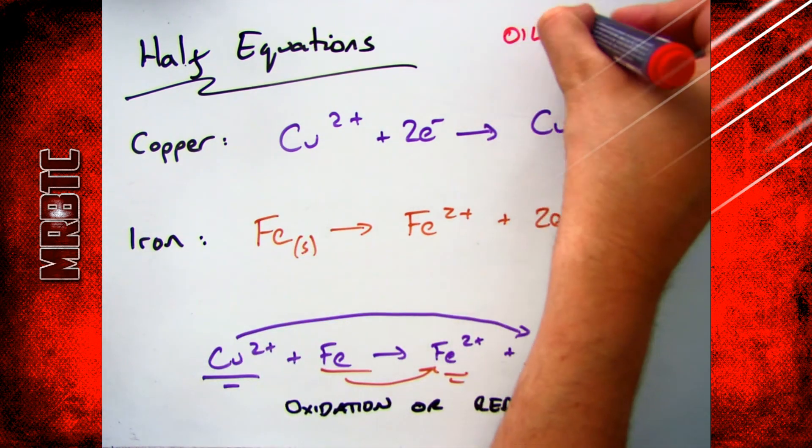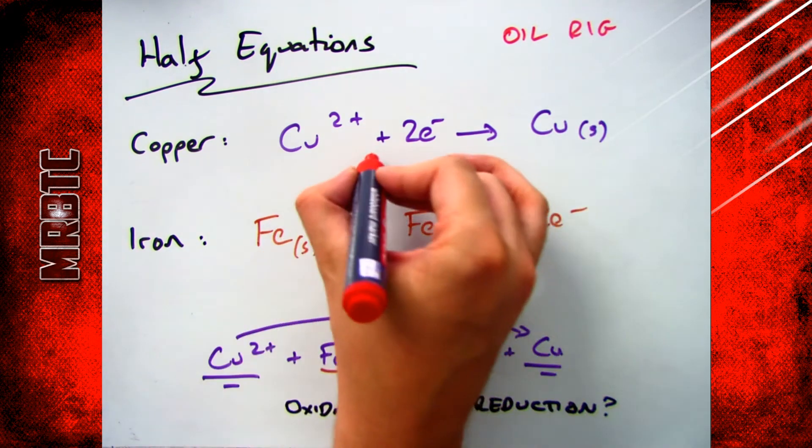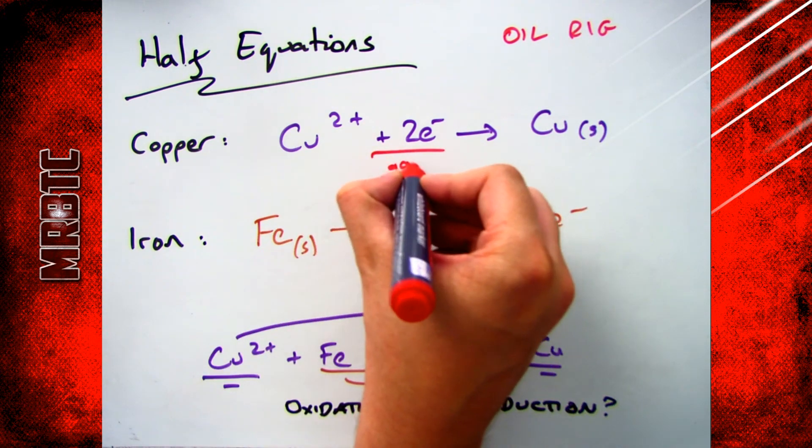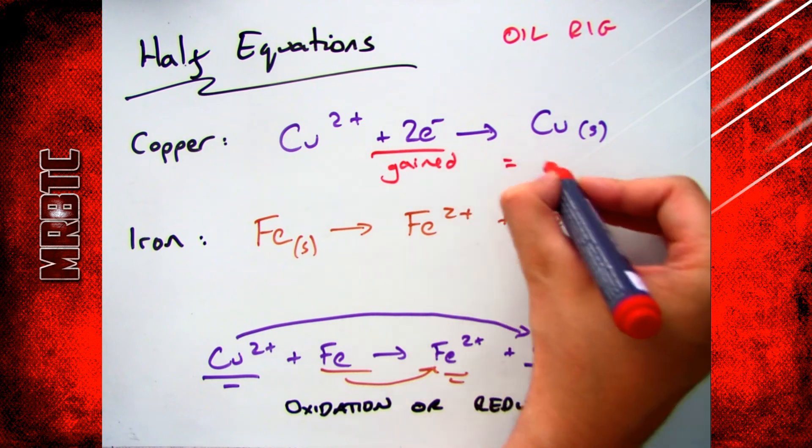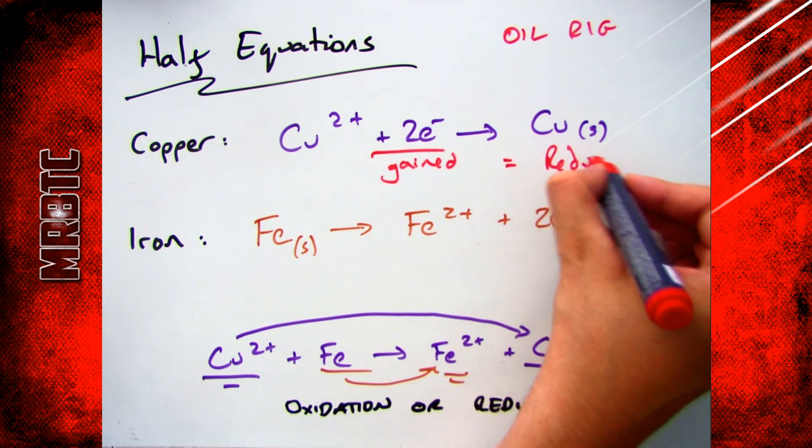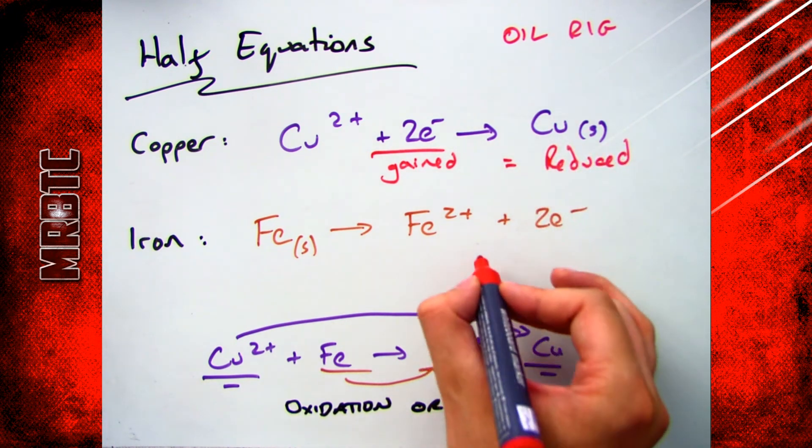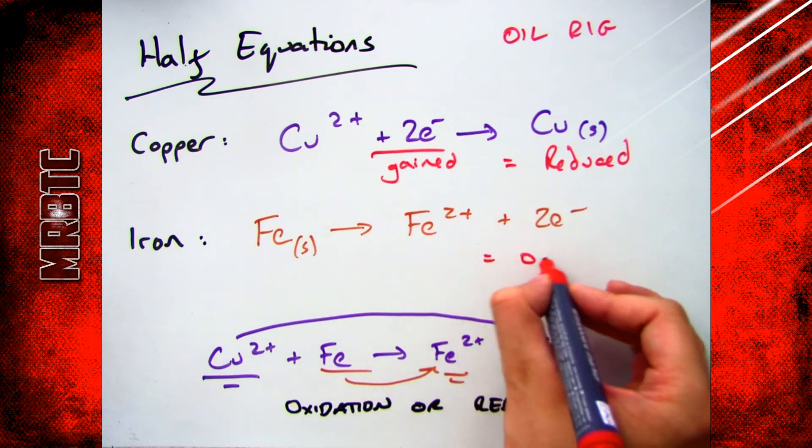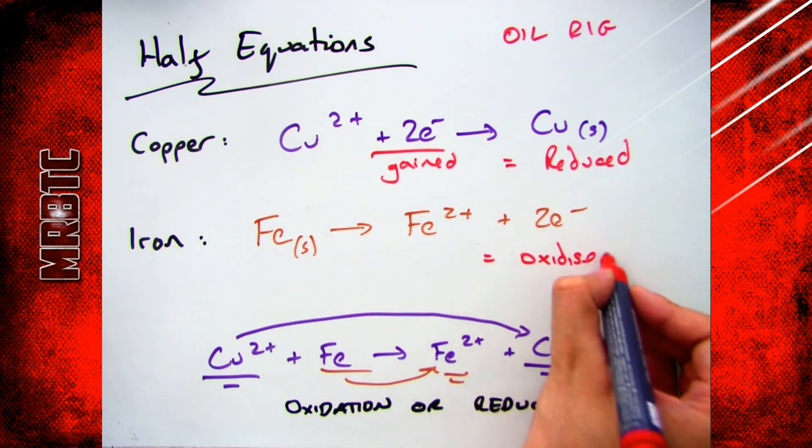And now I look at my OIL RIG. Oxidation is loss, reduction is gain. So my Cu2+ I'm adding two electrons on. They're gained, therefore it is reduction. My iron I'm going from Fe to Fe2+. It's losing electrons, therefore it has been oxidized.